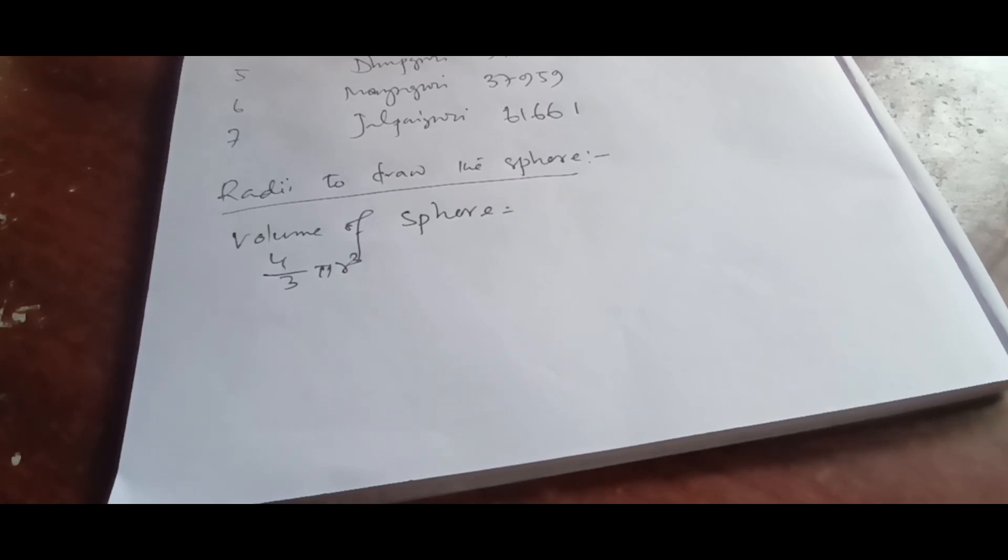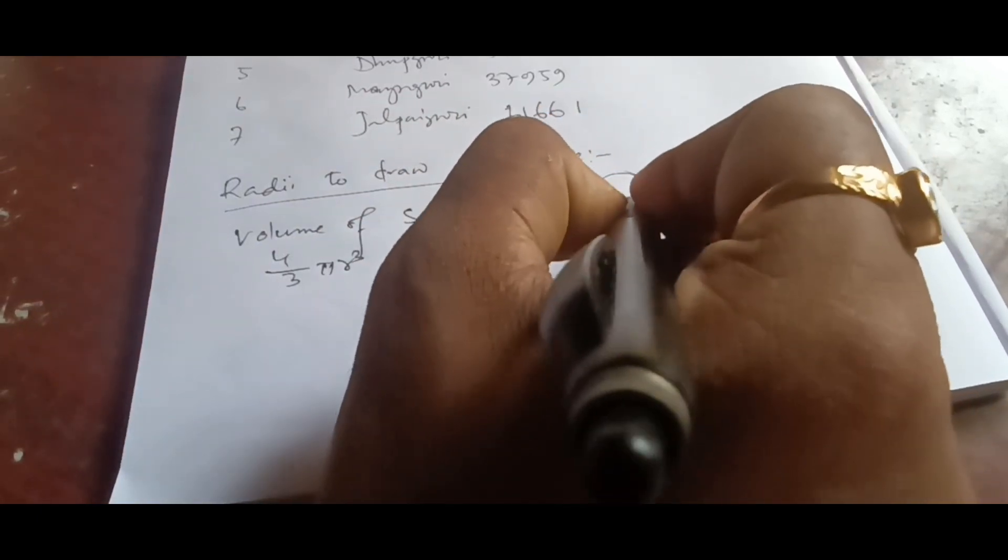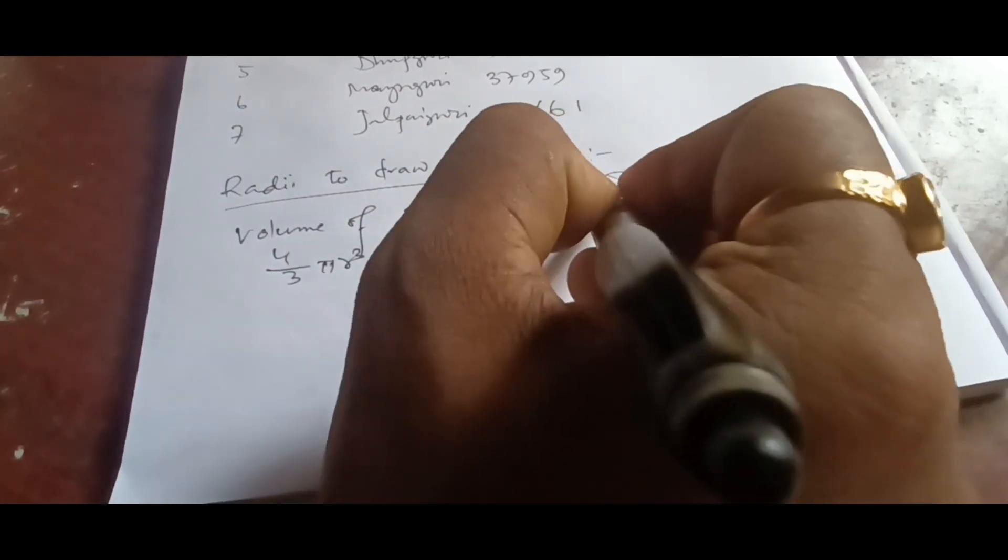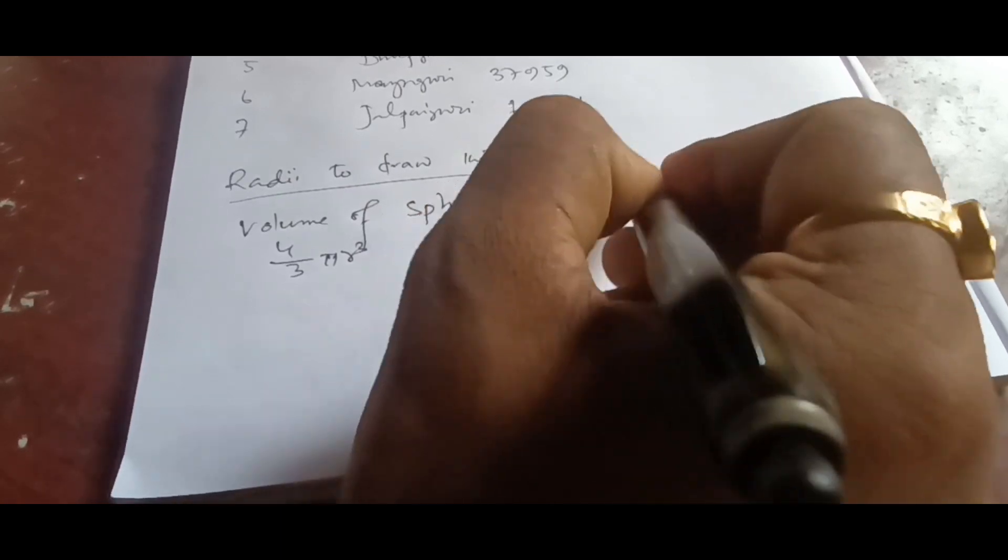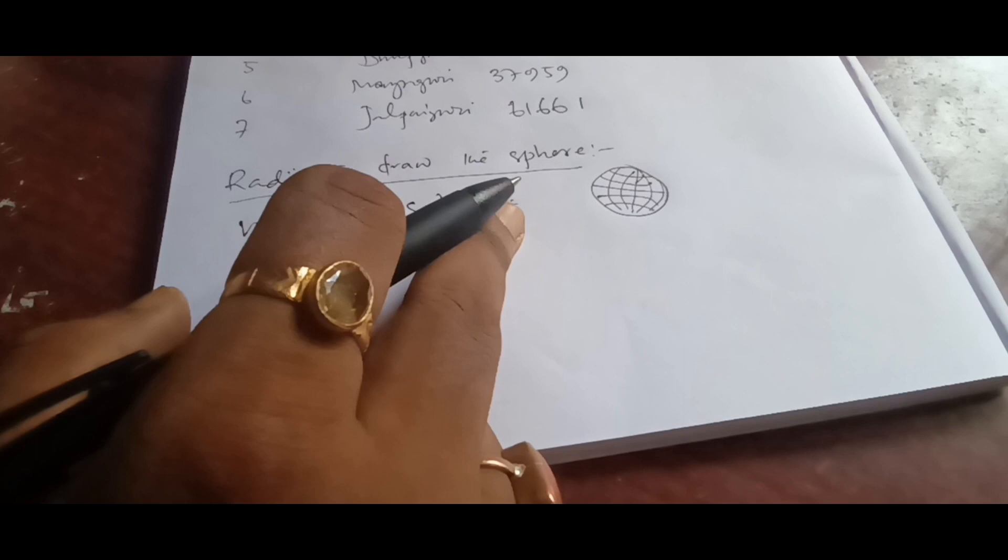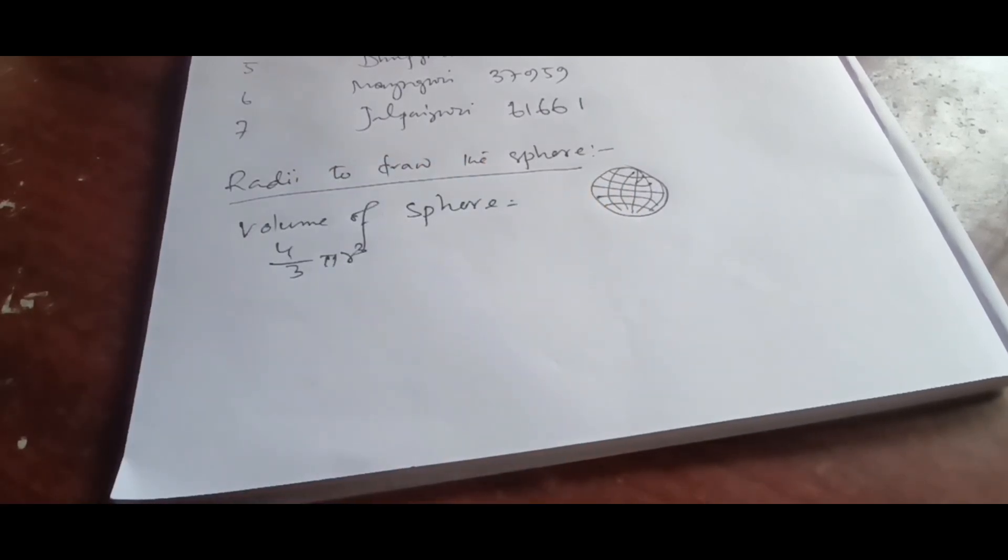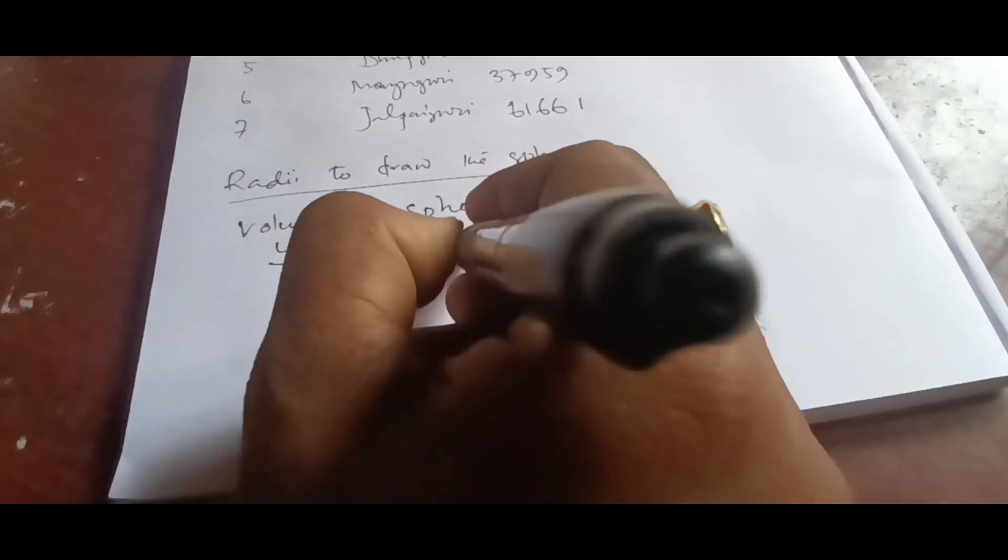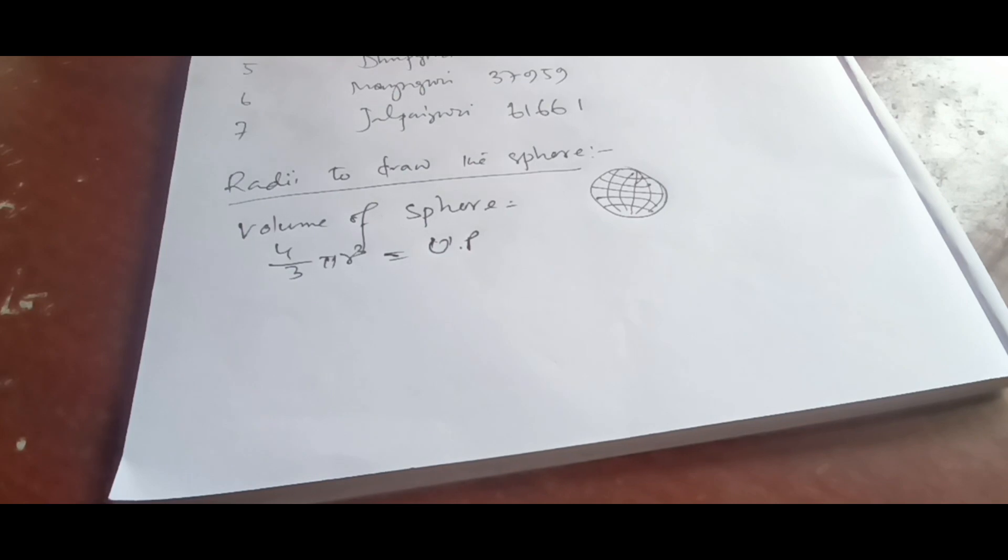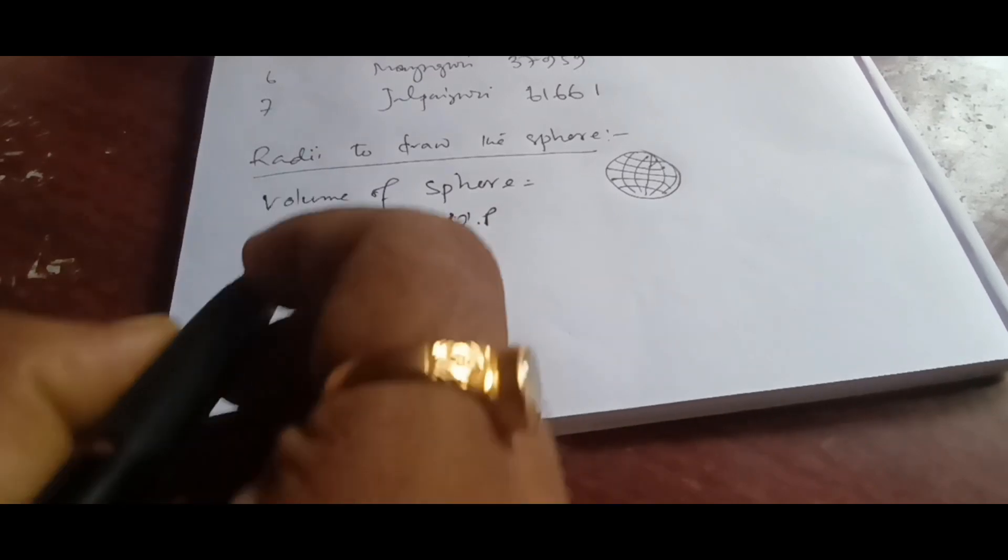This volume of sphere, for example if this is the sphere - similar type of sphere will be drawn on the map and this sphere will be of different sizes or volumes. This volume of sphere is representing the urban population. Can we say to find out the radius of the sphere we'll write r within the cube root?